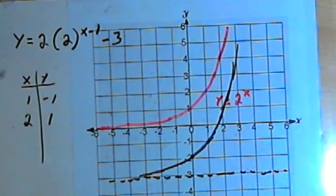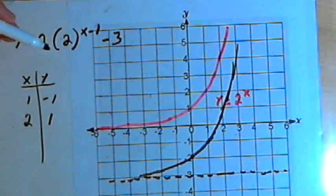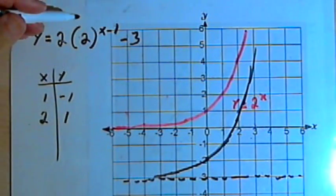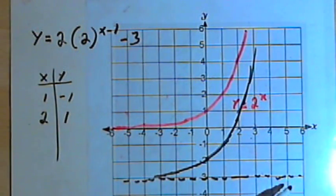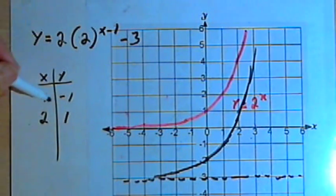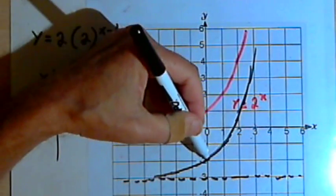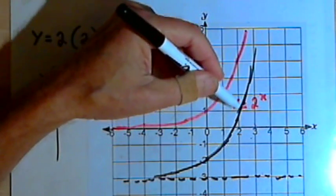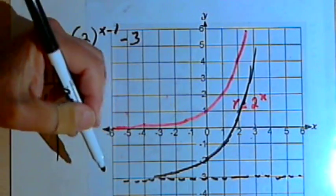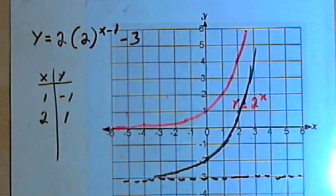So if you've got something fairly complex, what you might want to do is get a mental picture of what it's going to look like, maybe drawing a horizontal asymptote, and then actually take some values, make a table of values for x and y, plot those values, and then draw your graph. So that's about it. Take care, I'll see you next time.